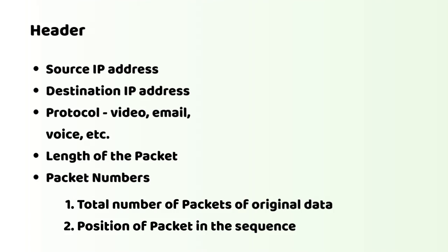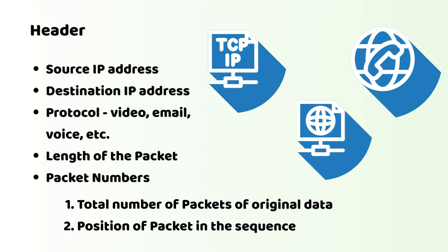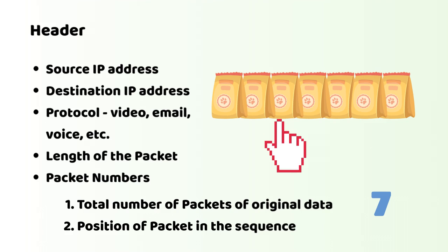The header contains the following details about the packet: source IP address, destination IP address, protocol to identify what type of packet is being transmitted — video, email, voice, etc. — length of the packet, and packet numbers. The first number is the total number of packets the original data was split into, and the second number is the position of the particular packet in the sequence of packets of the original data.